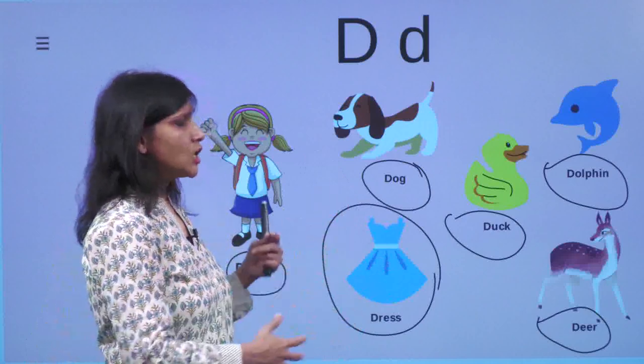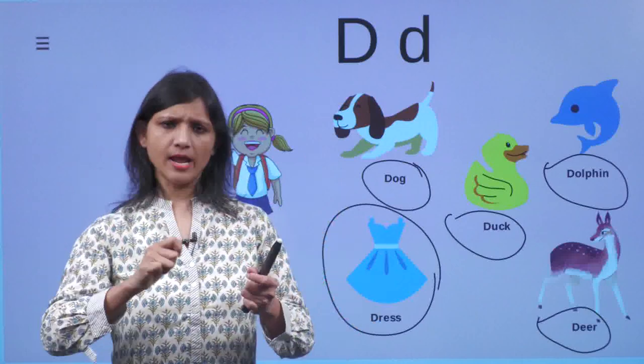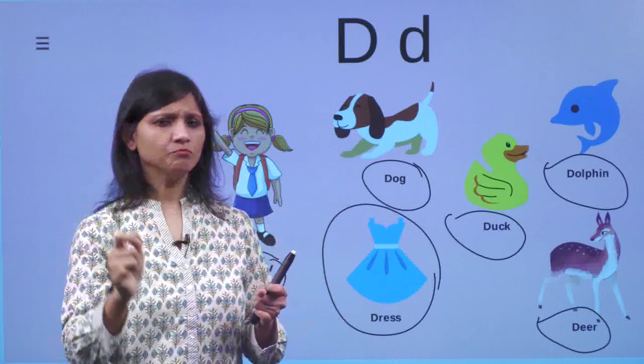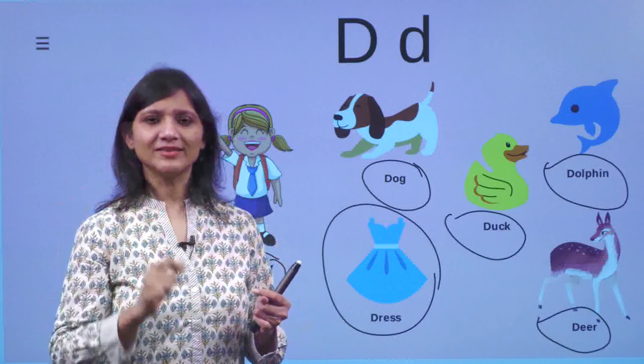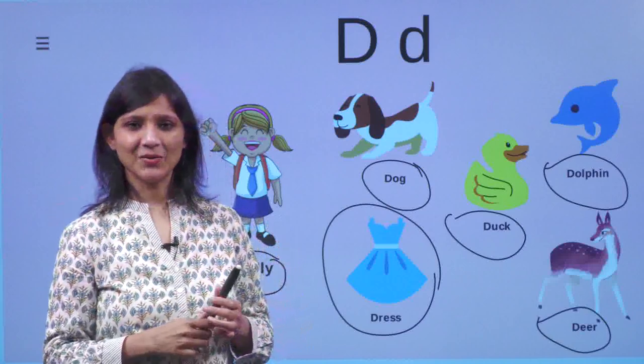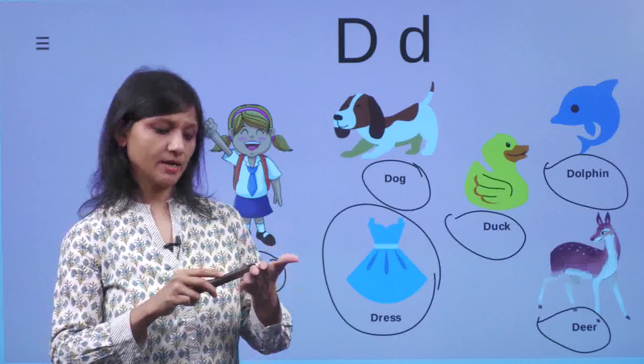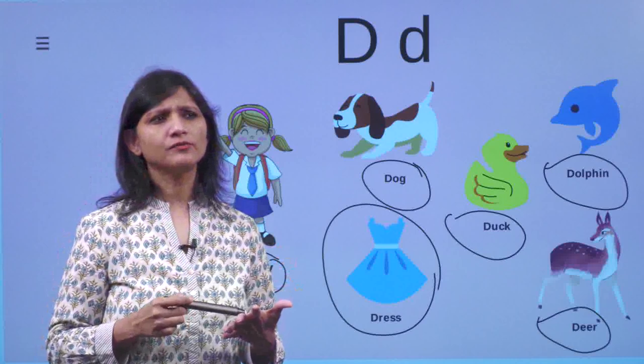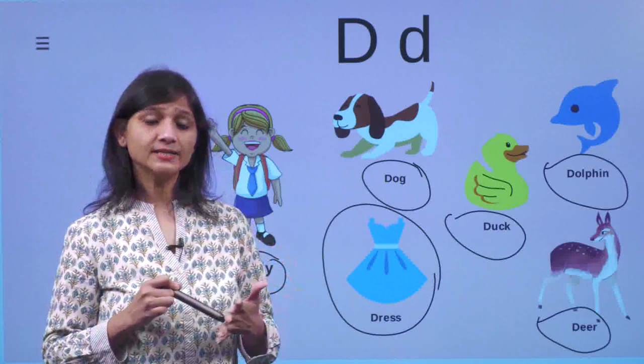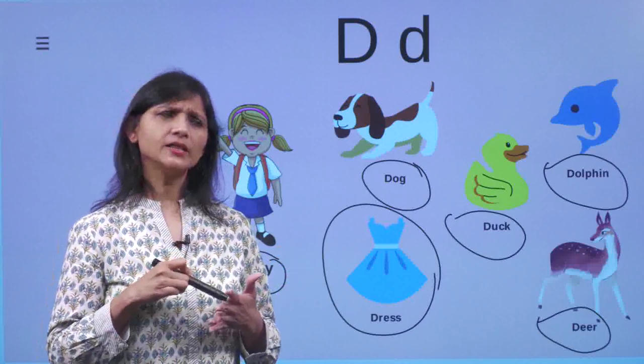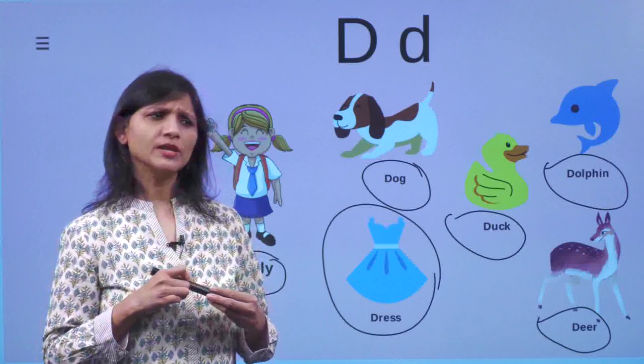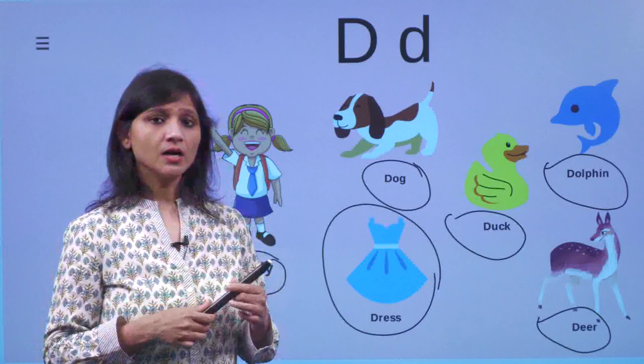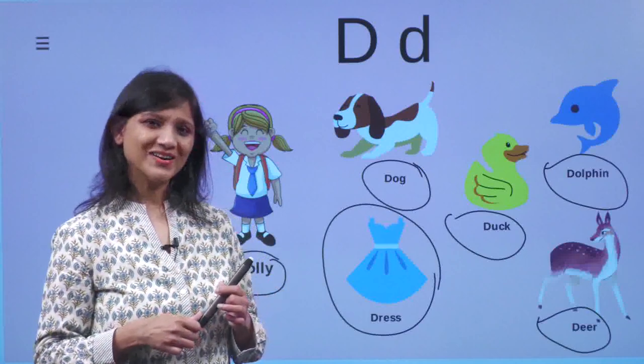So you also try, whatever is your name, just try to find out the words, the names of animals, birds or any other thing that starts with your letter. Like in my case, my name starts with C. So I can think of animal like cat. I can think of things like cup. I can think of something that starts with C and that is car.